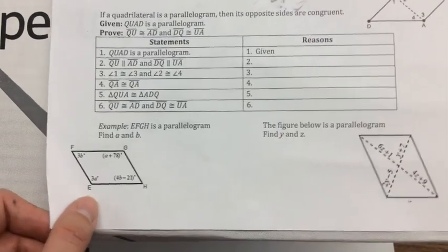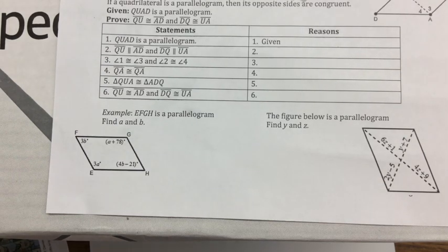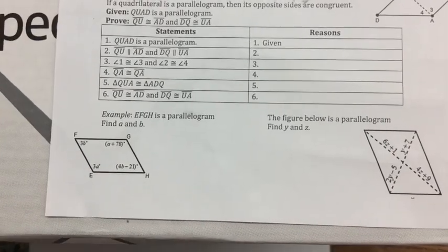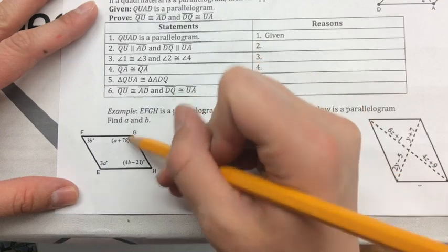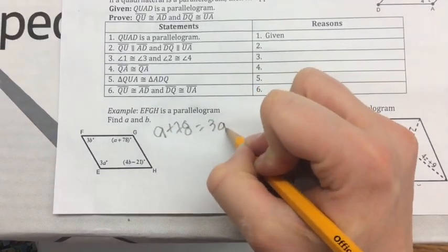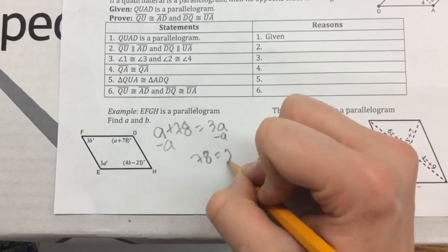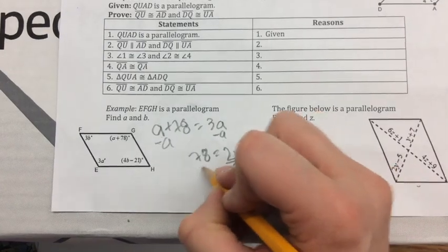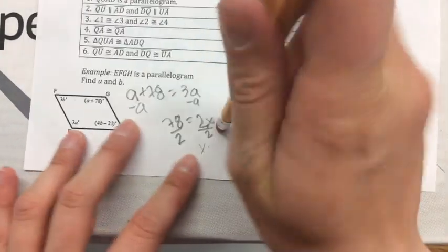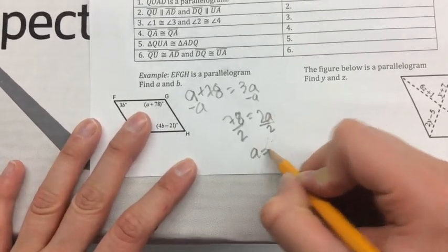Looking at the bottom problem on our notes, we want to find both A and B. To find A, notice these are opposite angles, so they're congruent — we set them equal: A + 78 = 3A. To solve, subtract A from both sides: 78 = 2A. Divide by 2, so A = 39.